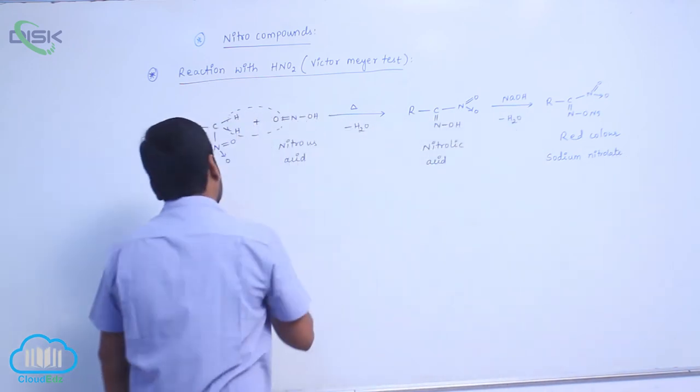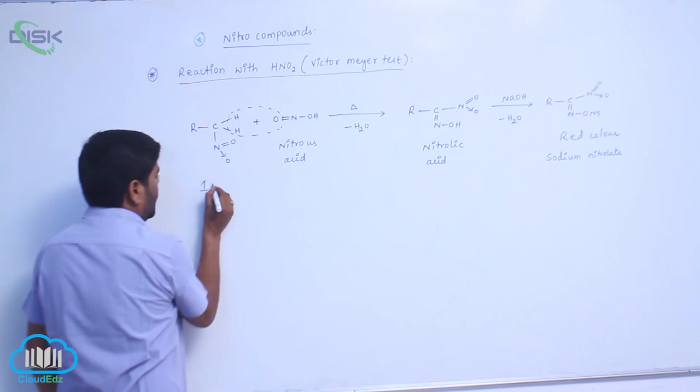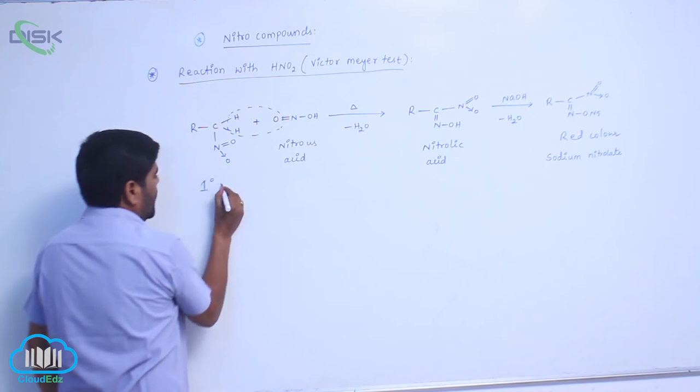This red color result corresponds to which nitroalkane? It is the primary (1°) nitroalkane.